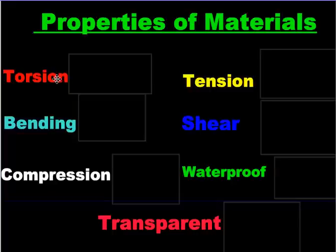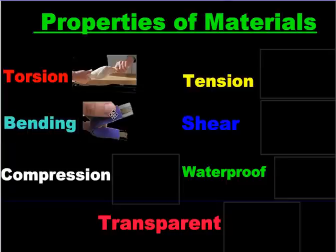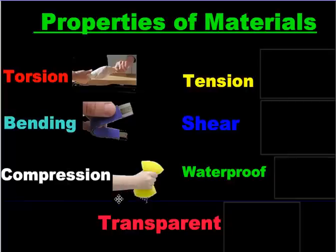We need to know what torsion is — that's when you take something and you twist it. Bending, of course, is when you bend something. Compression is when you take it and you squish it. If you can do that, it's got compression.